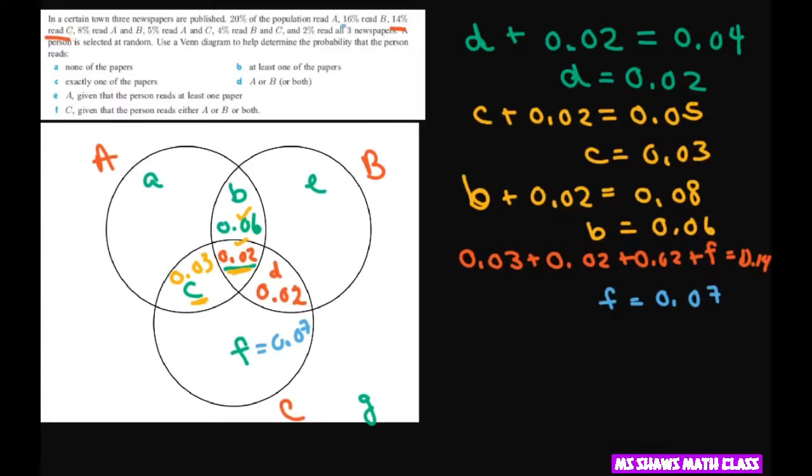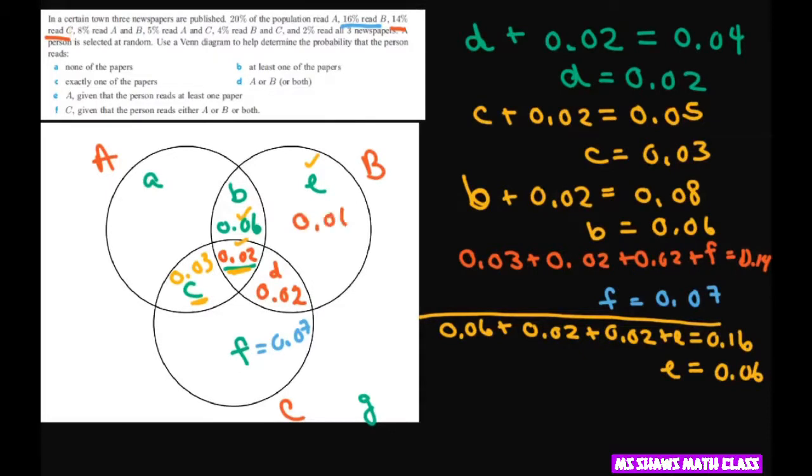Now working backwards we have 16% read B. So you're going to do the same thing to get E. So you add everything 0.06 plus 0.02 plus 0.02 plus E equals 0.16. So E is going to equal 0.06. So 0.06.